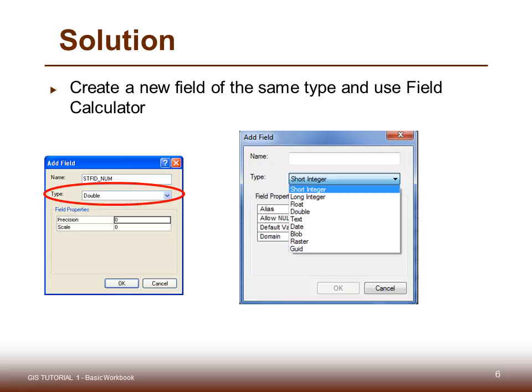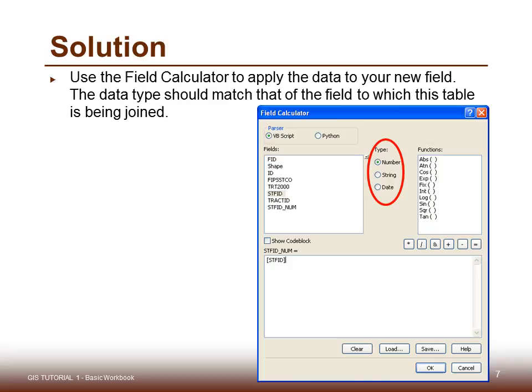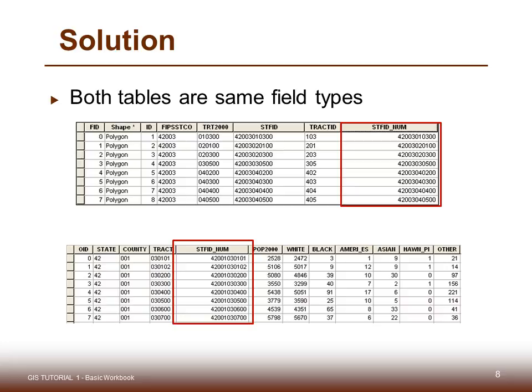Common data types to be aware of: short integer and long integer do not allow decimal points, but float does allow decimal points. A text type is exactly what it sounds like — you can't do any numerical calculations on text data. A date is a special date format within the database. Then use the field calculator to apply the data to the new field — the data type should match that of the field to which the table is being joined, resulting in both tables having the same field types.